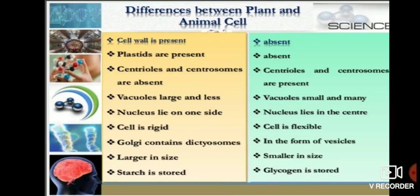Food is stored in plant cells in the form of starch, while in animal cells food is stored in the form of glycogen.